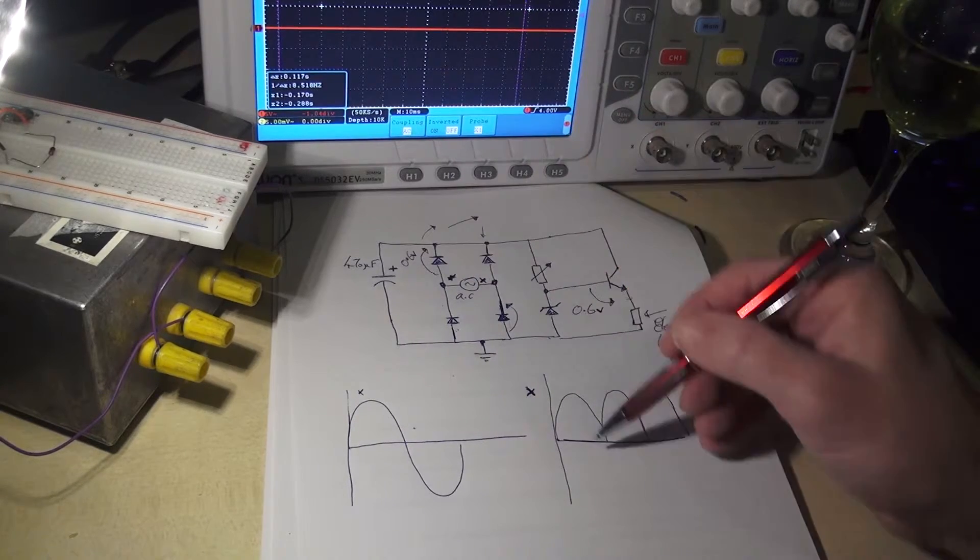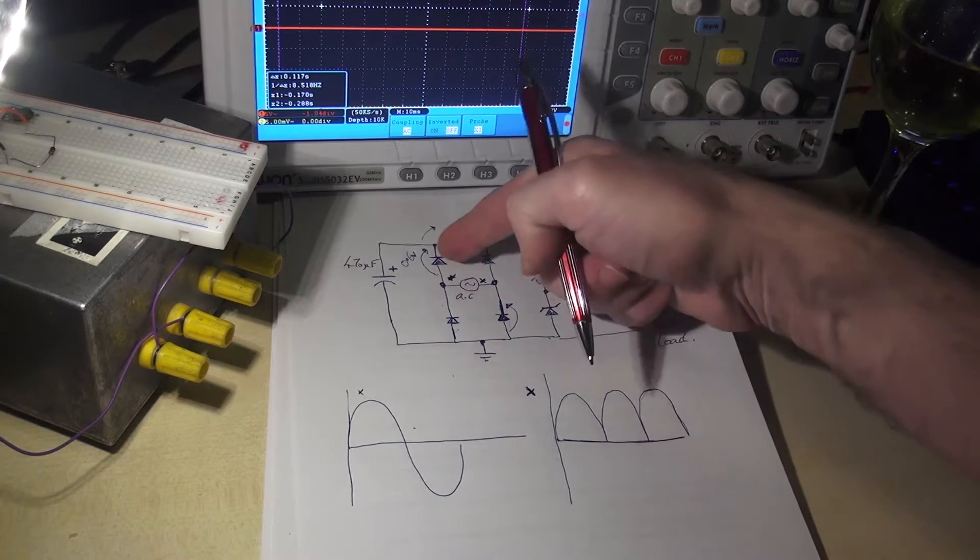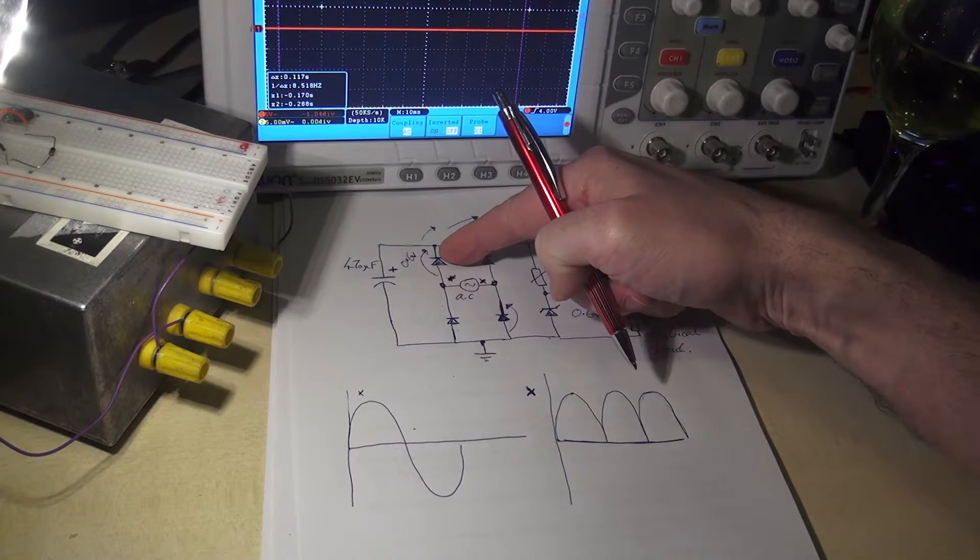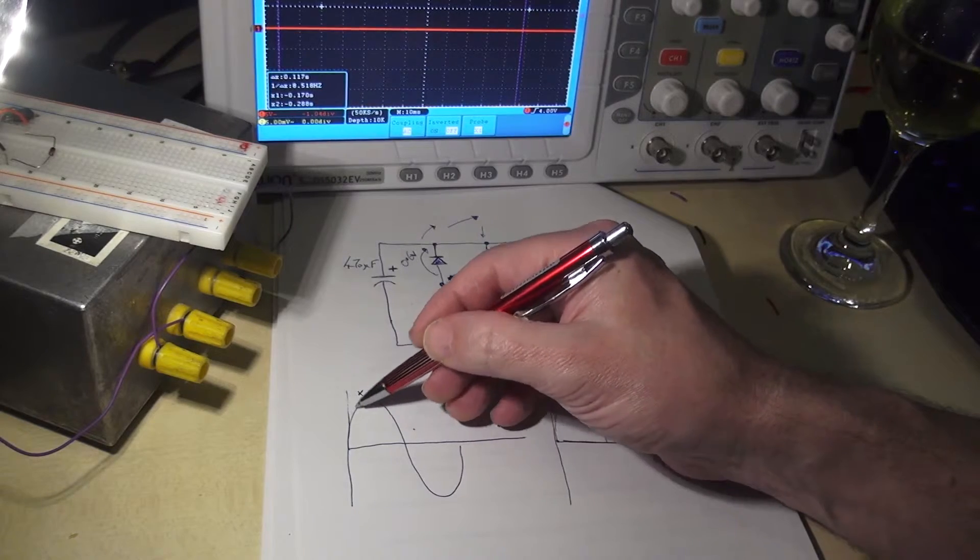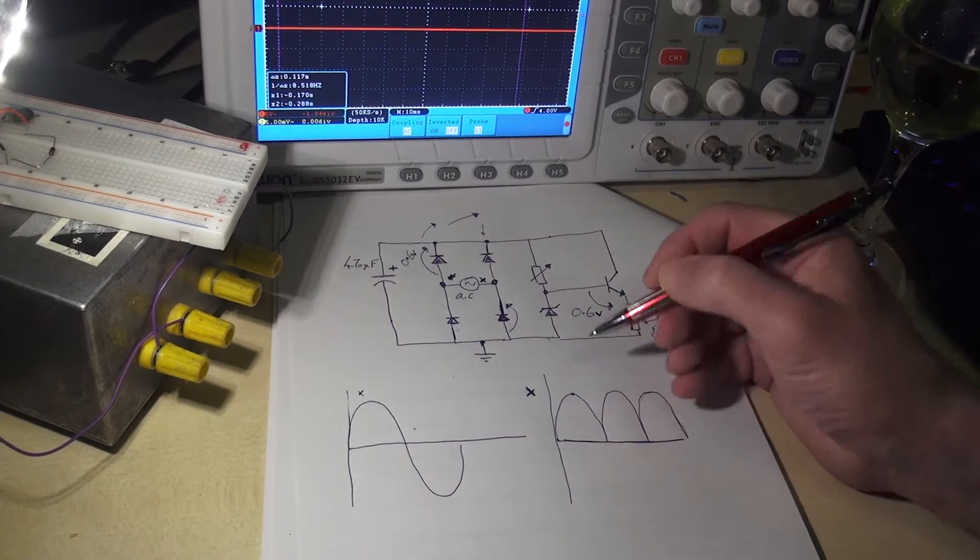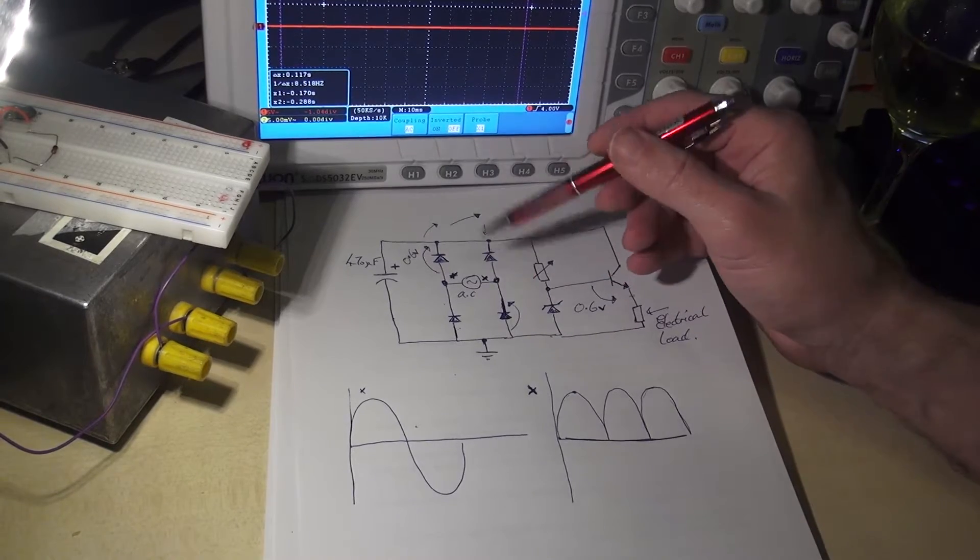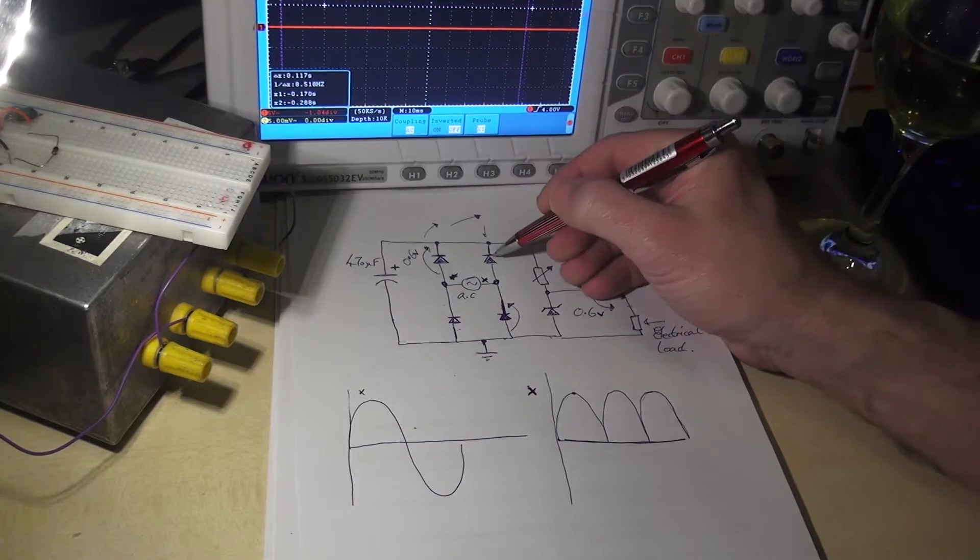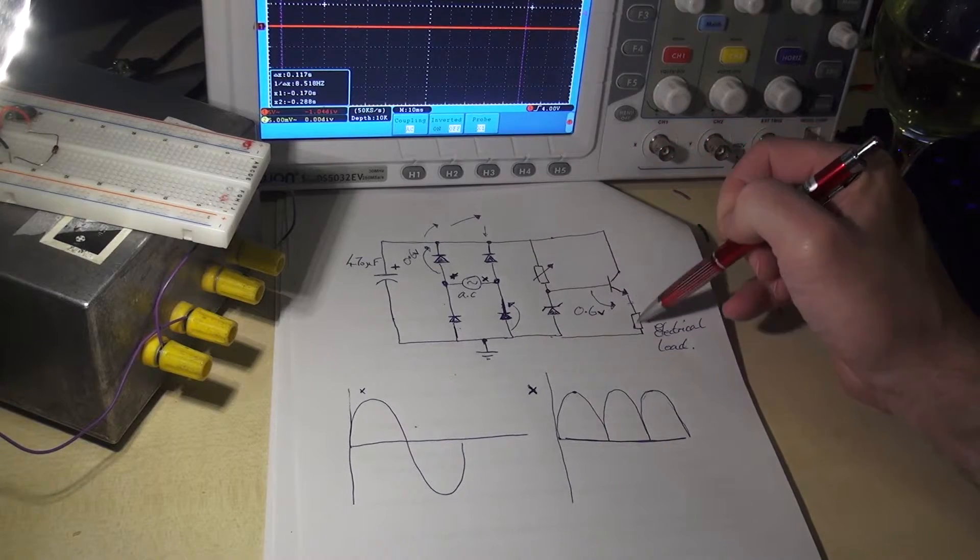So it will begin to charge at the same rate of the rise of voltage until the diode reaches its peak of conduction and then begins to fall away. So the output of the bridge rectifier begins to fall away. The capacitor then, because it no longer has a charging voltage, will look to discharge. But it can't discharge through either of the diodes because they are reverse biased.